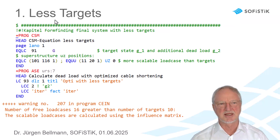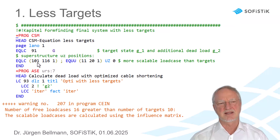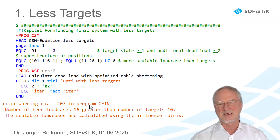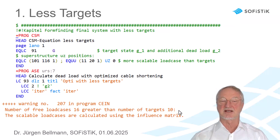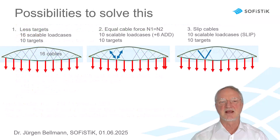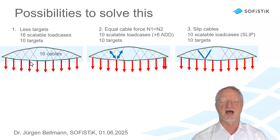Let's look at the first possibility with less targets. In the CSM equation tool I can tell it I have 16 scalable load cases but only 10 targets with uz equals zero. The program prints a warning: number of free load cases 16 greater than the number of targets 10. The scalable load cases are calculated using the influence matrix, meaning the program looks at which cable has a better effect to reach the target and stresses it a little bit more.